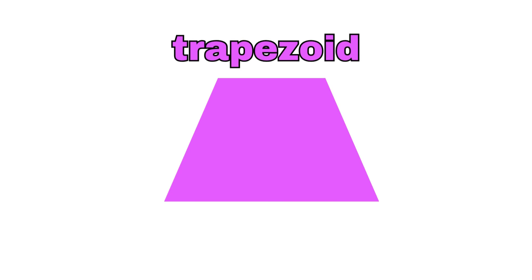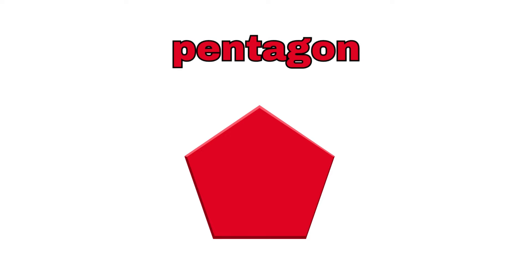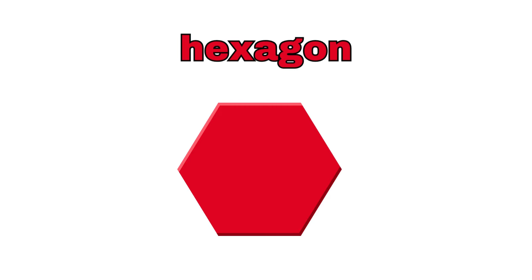Trapezoid, parallelogram, diamond, pentagon. A pentagon has five corners. Hexagon. A hexagon has six corners.